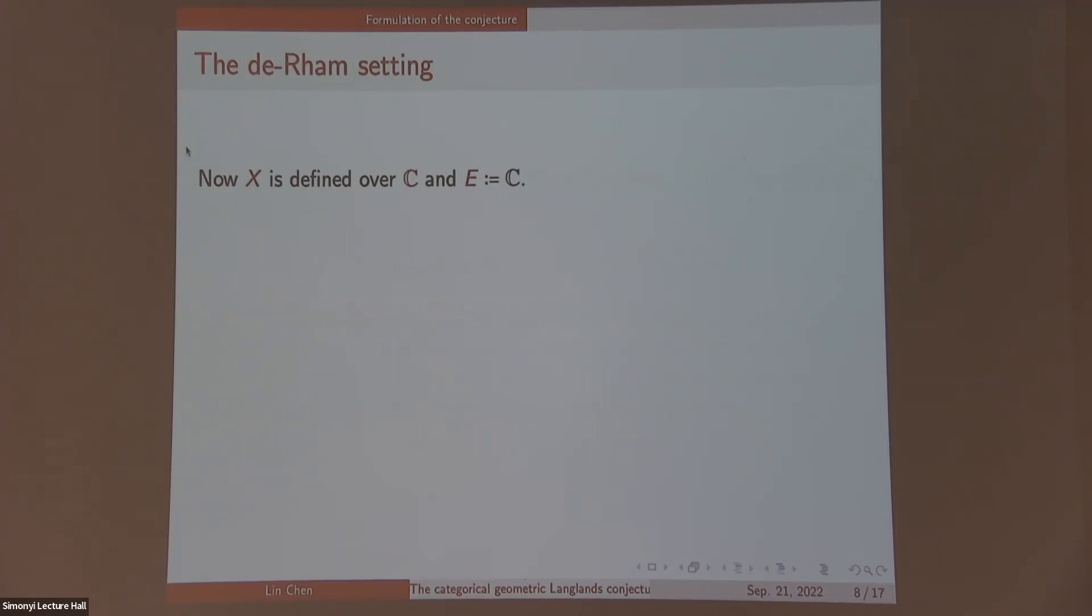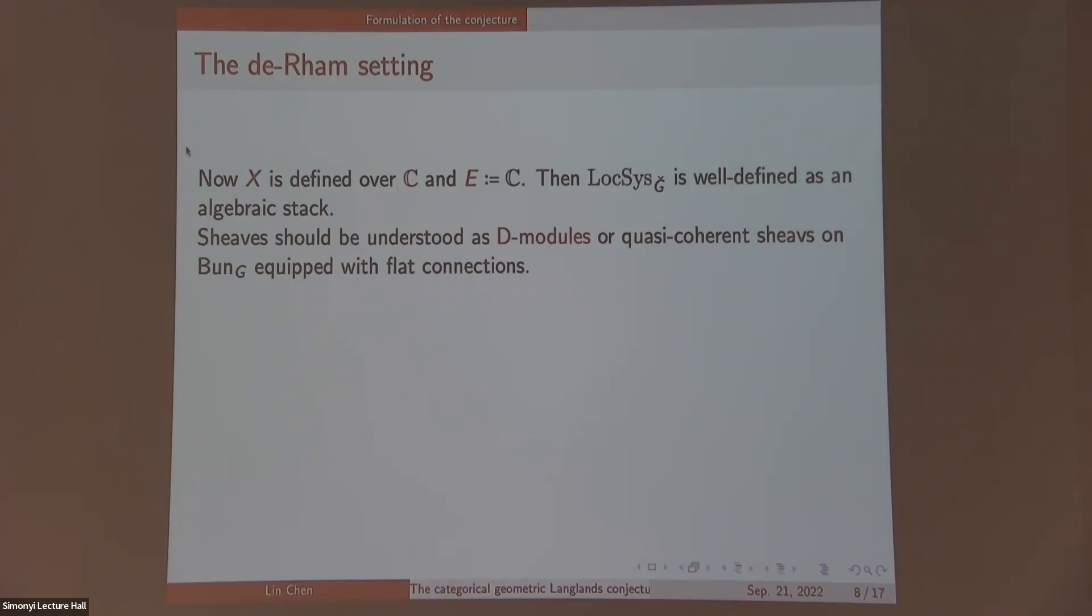So let's move to the de-Rham setting. From now on, our curve X should be defined over complex numbers and our coefficient field is just C. We turn to this setting because the description is easier and it's earlier in history. Then this Loc_SG-check, it actually exists as a well-defined algebraic geometry object. It's an algebraic stack. And we should understand sheaves, no longer as l-adic sheaves because we are over C, we should understand them as D-modules or quasi-coherent sheaves equipped with flat connections.